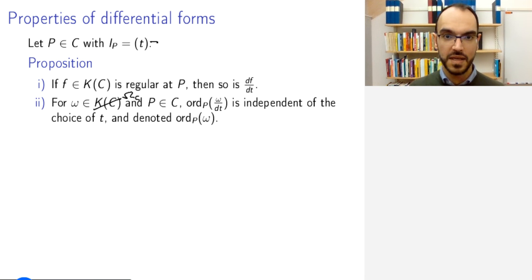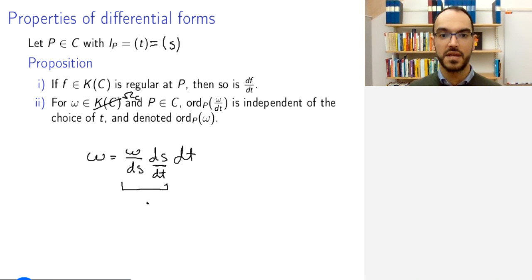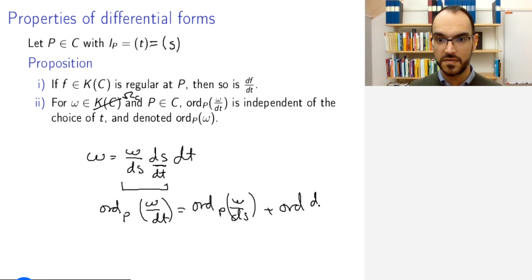So, what does this mean? Well, this i_p, I can choose a different generator s for the ideal i_p. And then I need to show that it doesn't differ, the order doesn't depend on t or s. So, if I take ω, then ω = (ω/ds)·ds, and because ds = (ds/dt)·dt, I have this, and by uniqueness of the coordinate representation, this has to be ω/dt. And so, the order at p of ω/dt is the order of this product, and because the order is a discrete valuation, this is the order of ω/ds plus the order of ds/dt.